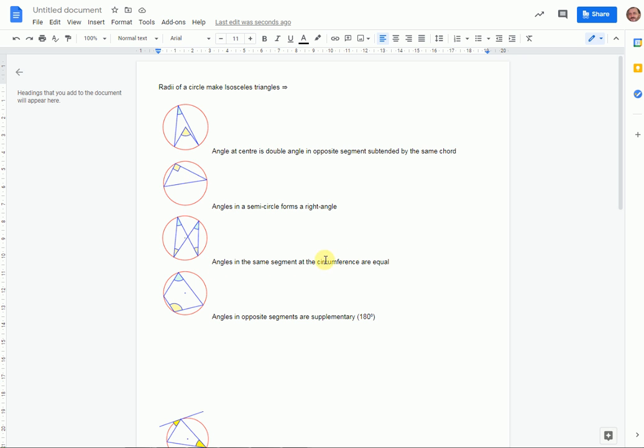Angles in the same segment on a circumference are equal. So we've got a chord at the bottom here. These two angles must be equal because the angle made at the center by that chord doesn't change. So these are both half of that angle. So these angles are equal. And so by doing a chord on the other side, these two angles are equal.